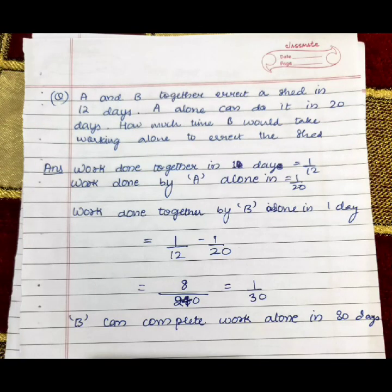Suppose in this example A and B together erect a shed in 12 days. A alone can do it in 20 days, how much time would B take working alone to erect the shed?